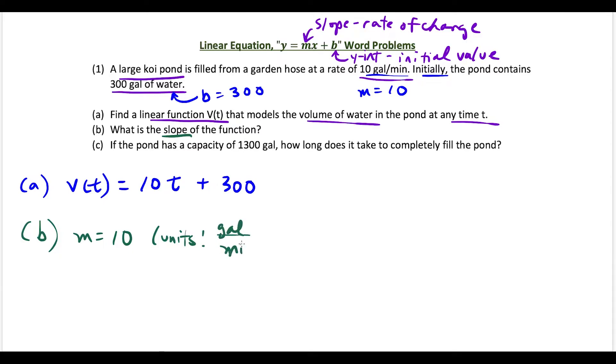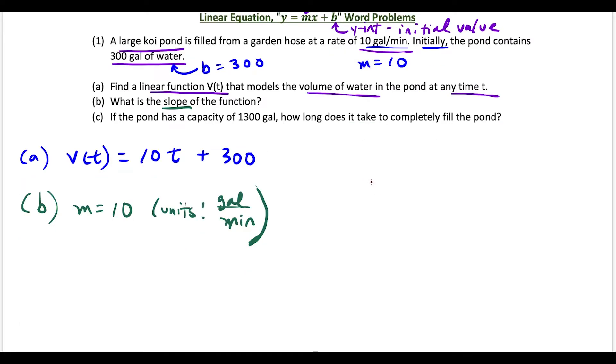Now it's good to look at the units because it tells you information about the question, which may help us with later parts, like finding how long it takes to completely fill the pond. For this last part, let's get a visual. We're going to sketch this line with V(t) going up and t going across. The units are going to be gallons for the vertical axis and minutes for the horizontal axis.